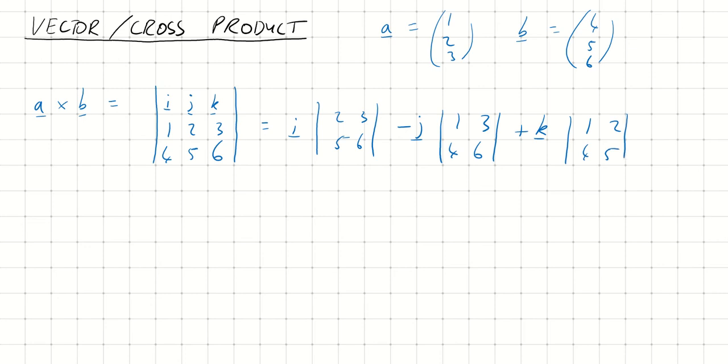This is just a normal 3 by 3 matrix determinant except for the first row of these I, J, K directional vectors.